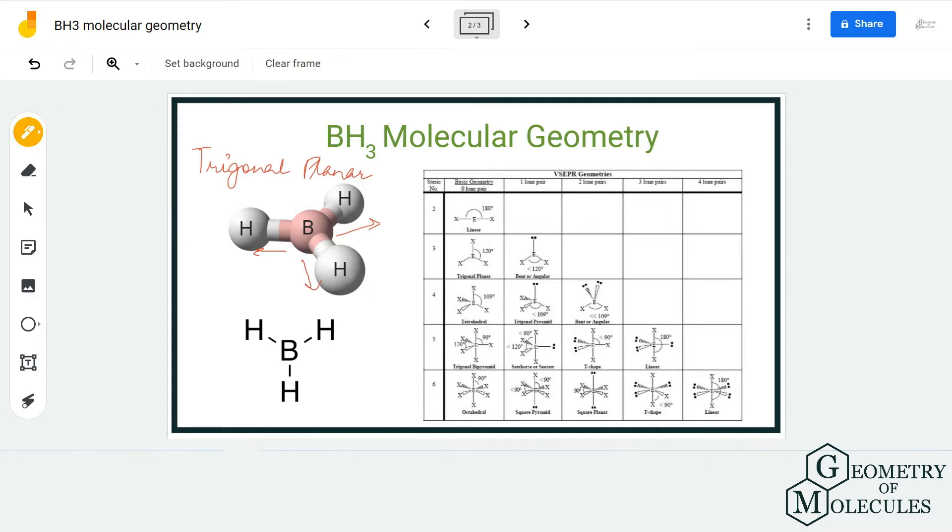So the steric number of BH3 is 3 because there are three electron regions around boron atom. The steric number is 3 and there are no lone pairs on this central atom. And hence, this geometry is known as trigonal planar, and it is quite evident as well.